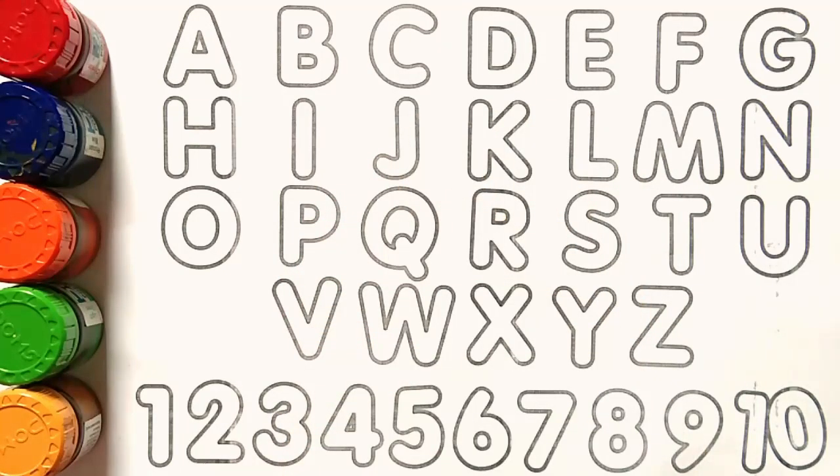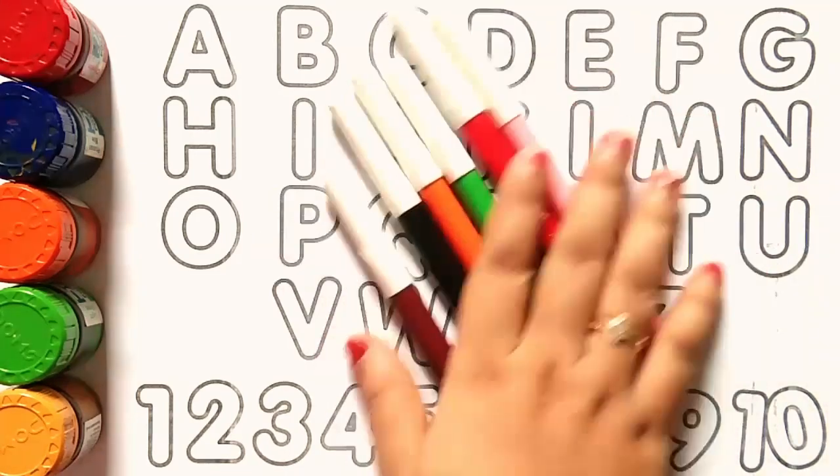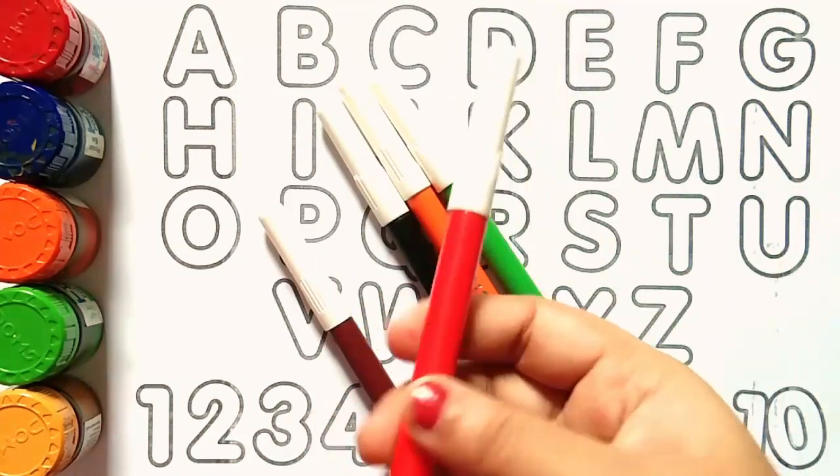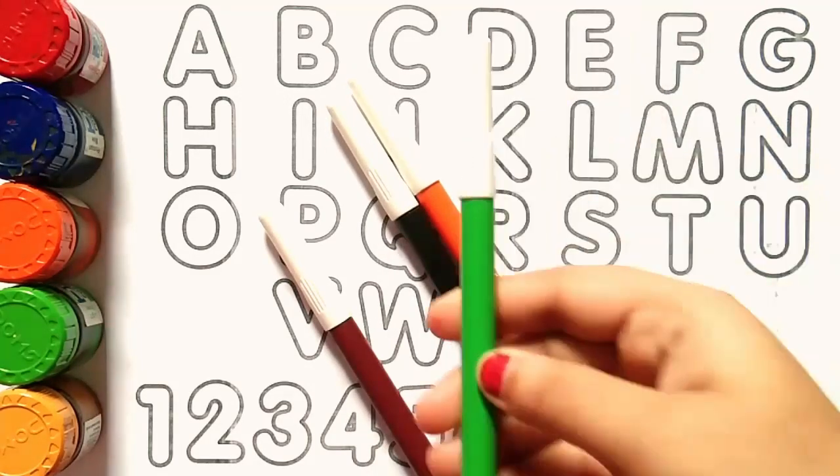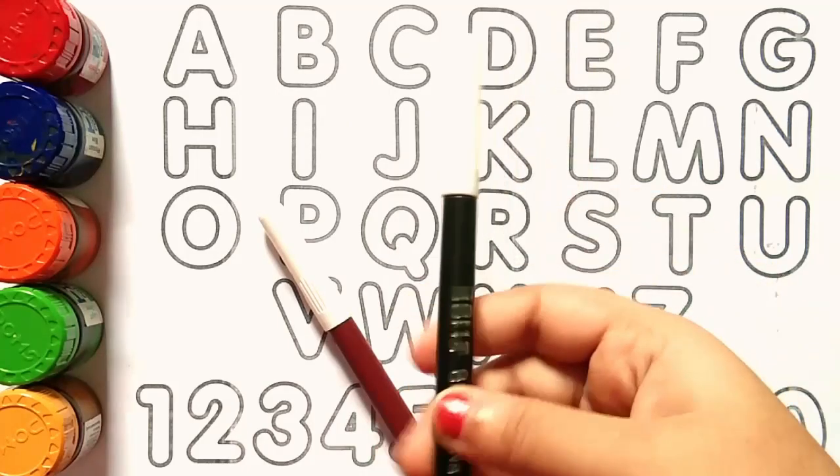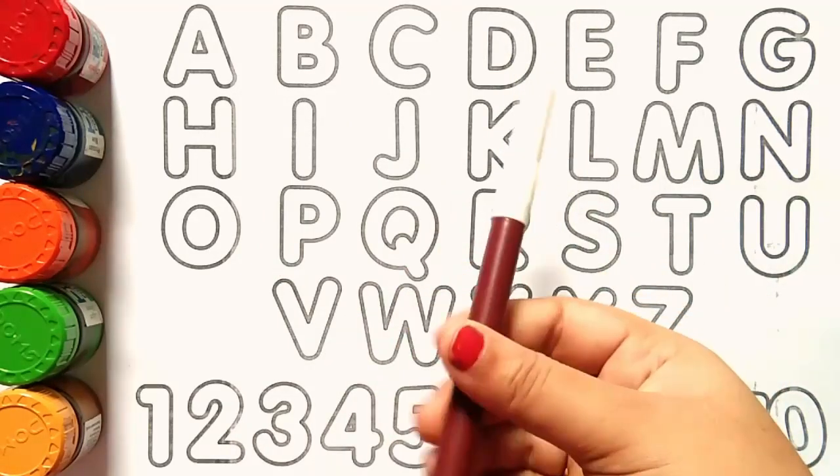Hello kids, let's learn some alphabets. Pink color, red color, light green color, orange color, black color, brown color.